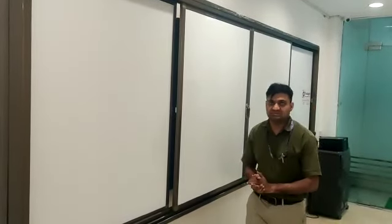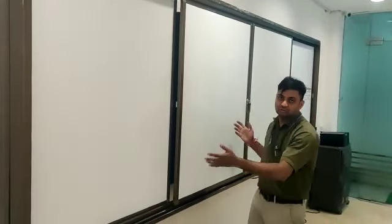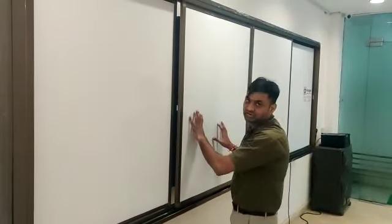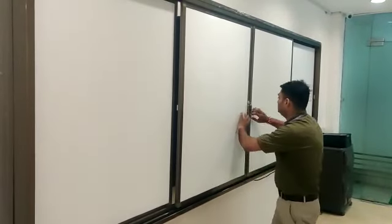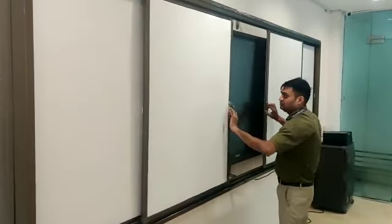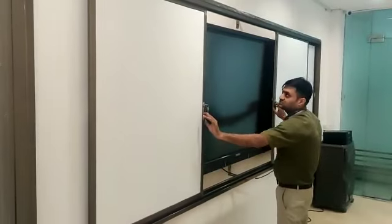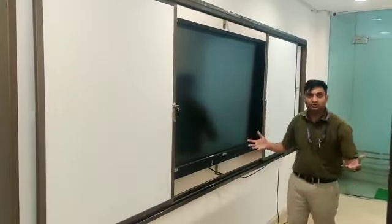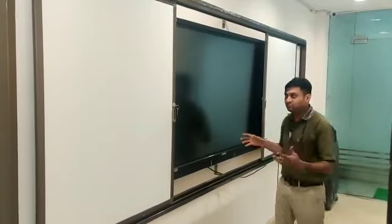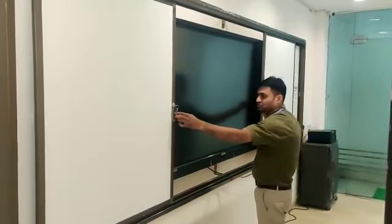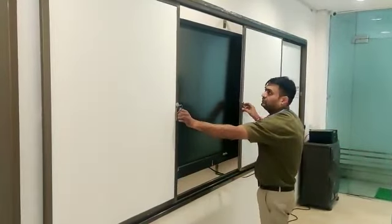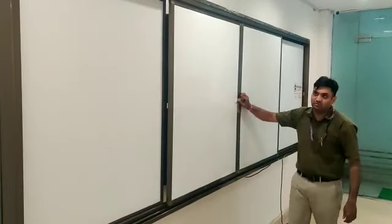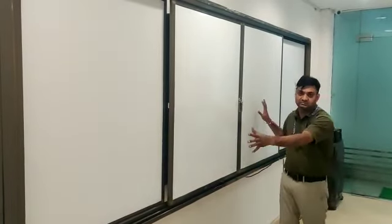This is our slider enclosure. This is the whiteboard that you can write on, and once you open this slider, you can use this interactive panel. Use it, and when your use is complete, you can close it again and lock it. The lock is there and you can completely shut it down.